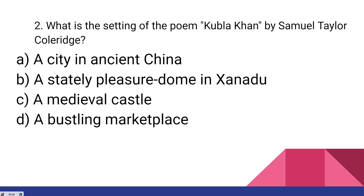What is the setting of the poem Kubla Khan by Samuel Taylor Coleridge? The answer is option B. But remember, there is a problem with this question — Xanadu is modern-day Beijing, so 'a city in ancient China' could also be correct. But as this was asked, the correct answer is B.